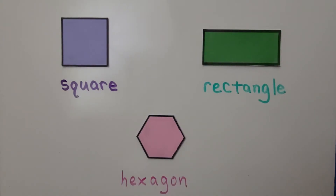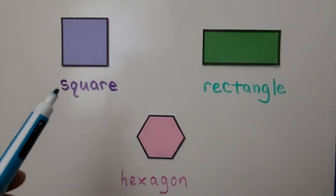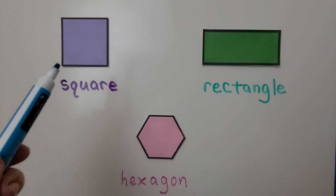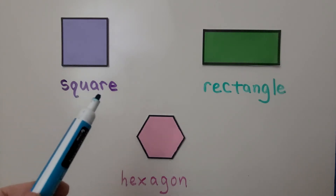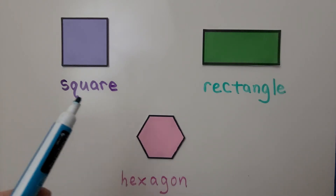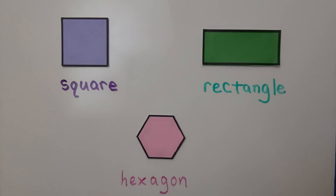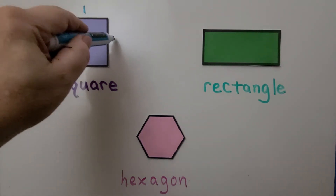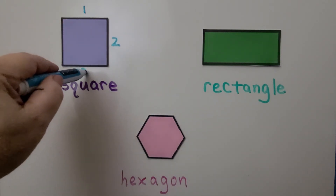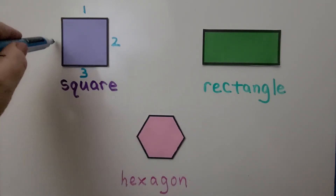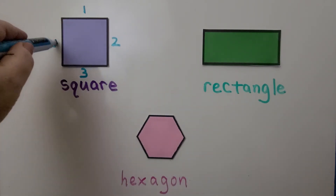Here we have a square. S-Q-U-A-R-E. That's the word square. If you notice, the square has one, two, three, four sides.